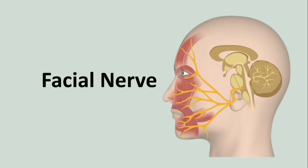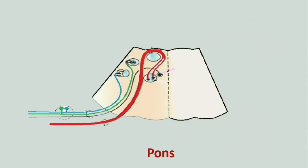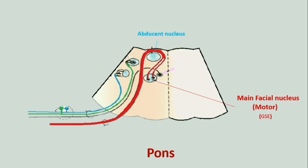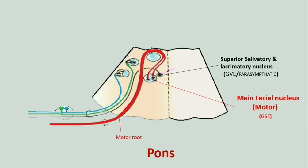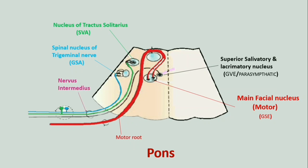The facial nerve has sensory, motor, and parasympathetic components. In the lower pontine tegmentum, there is the main facial nucleus or motor nucleus, located ventrolateral to the abducent nucleus. Its fibers loop around the abducent nucleus and emerge as the motor root. The superior salivatory and lacrimatory nucleus gives preganglionic parasympathetic fibers. The nucleus of tractus solitarius conveys taste sensation, and the spinal sensory nucleus of the trigeminal nerve is responsible for touch, pain, and temperature sensations. Fibers from the sensory and parasympathetic nuclei constitute the nervus intermedius, which combines with the motor root to form the facial nerve.